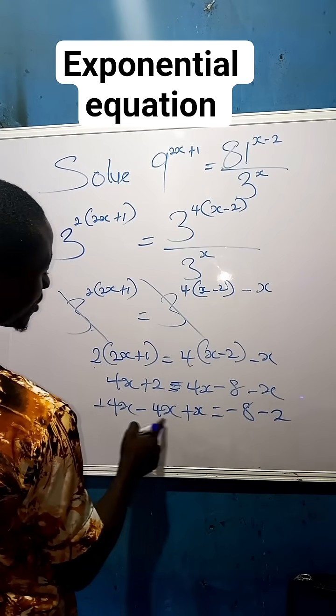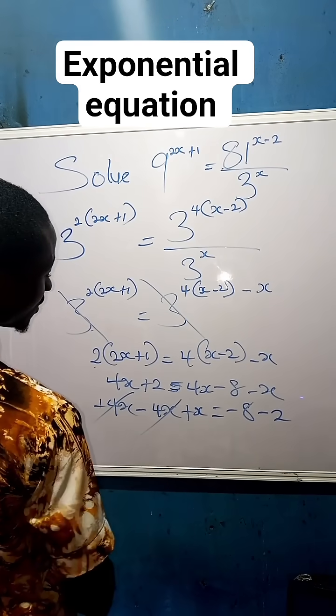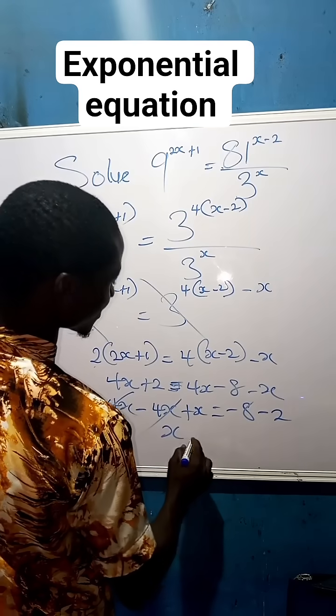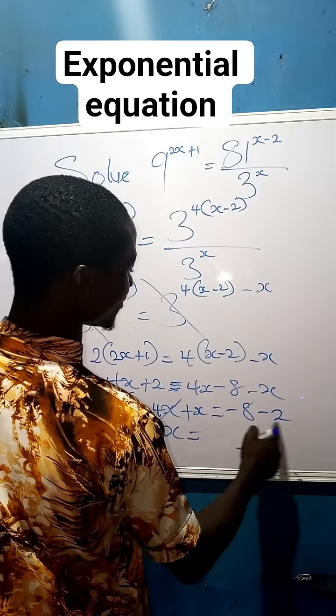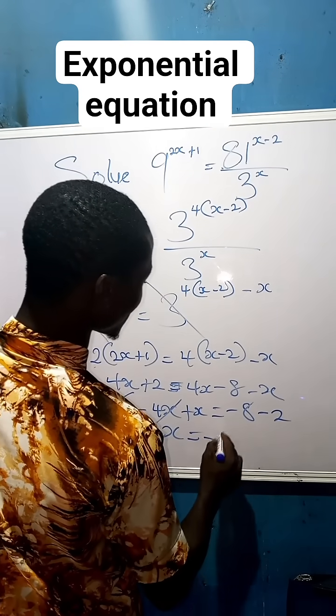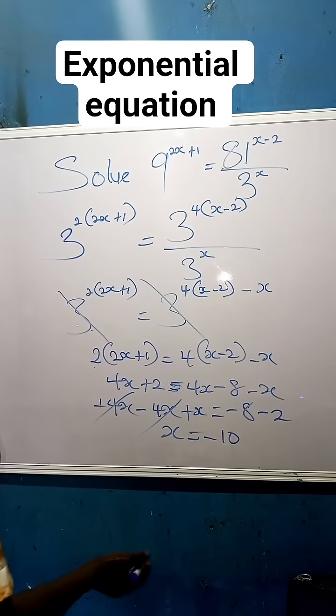Now see, 4x minus 4x is 0. So all you have left is x equals to minus 8 minus 2, that is minus 10. So this becomes our final answer.